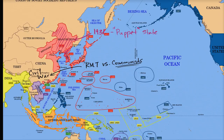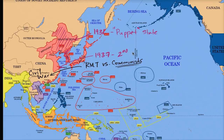That continues through the 1930s until we get to 1937. The Japanese used some pretexts — kind of a false flag, the Marco Polo Bridge incident — as justification to have an all-out war with China. So in 1937, you have all-out war, and this is often referred to as the Second Sino-Japanese War. Many historians would even consider this the beginning of World War II, or at least the beginning of the Asian theater — the all-out war between Japan and China.